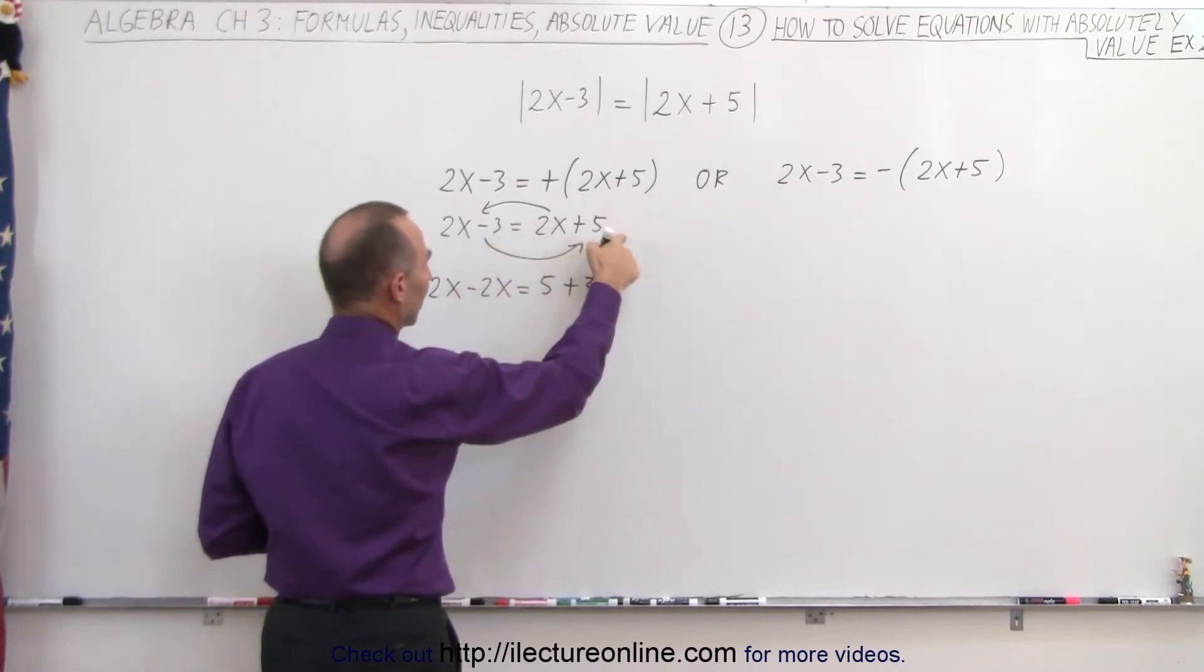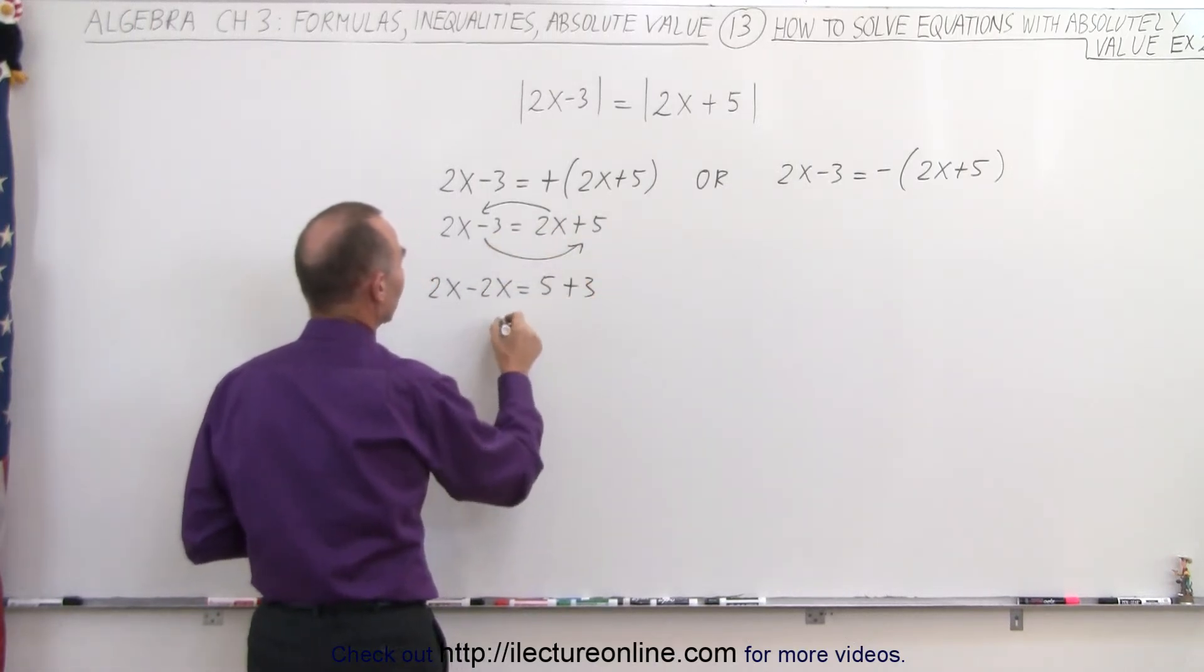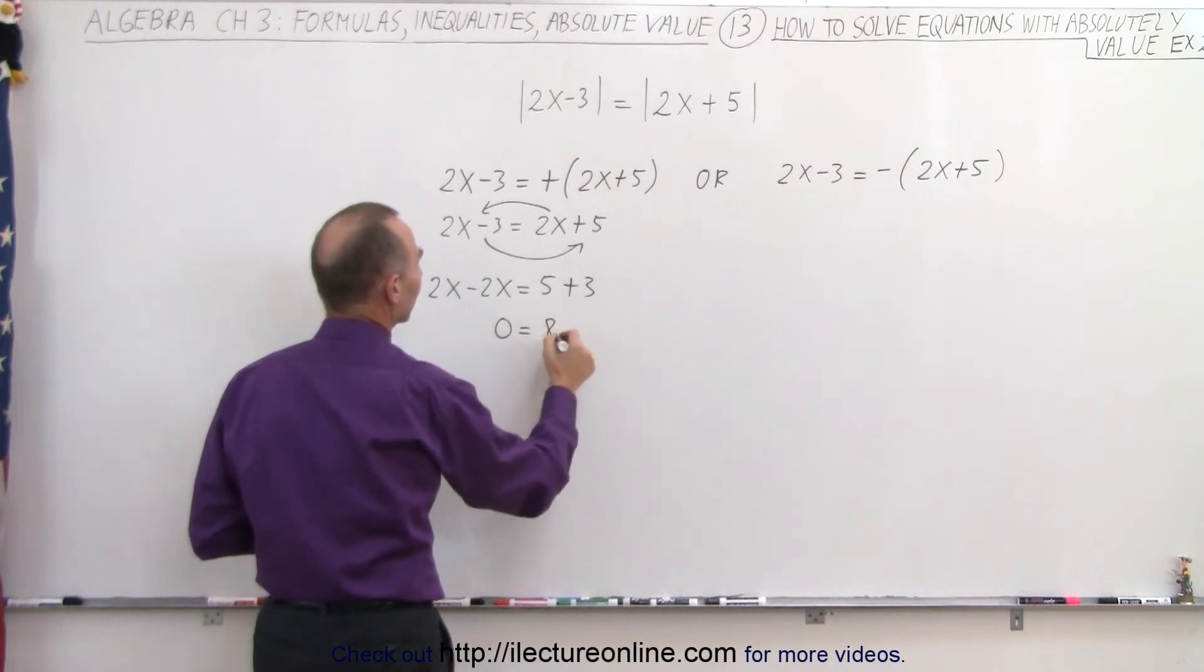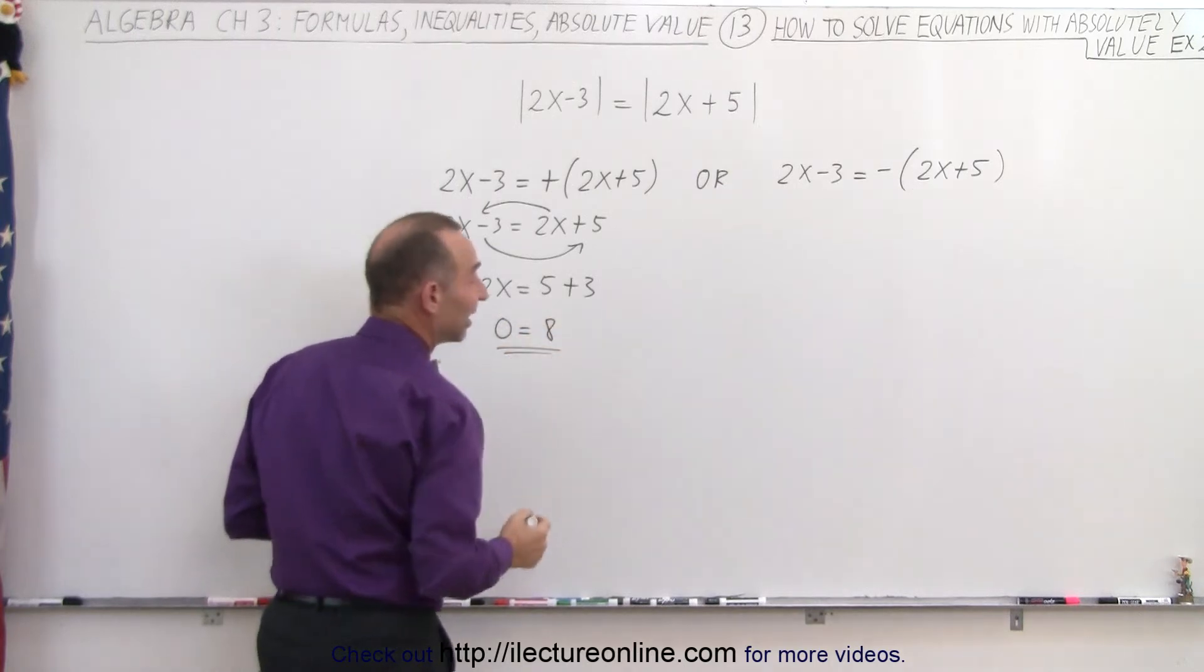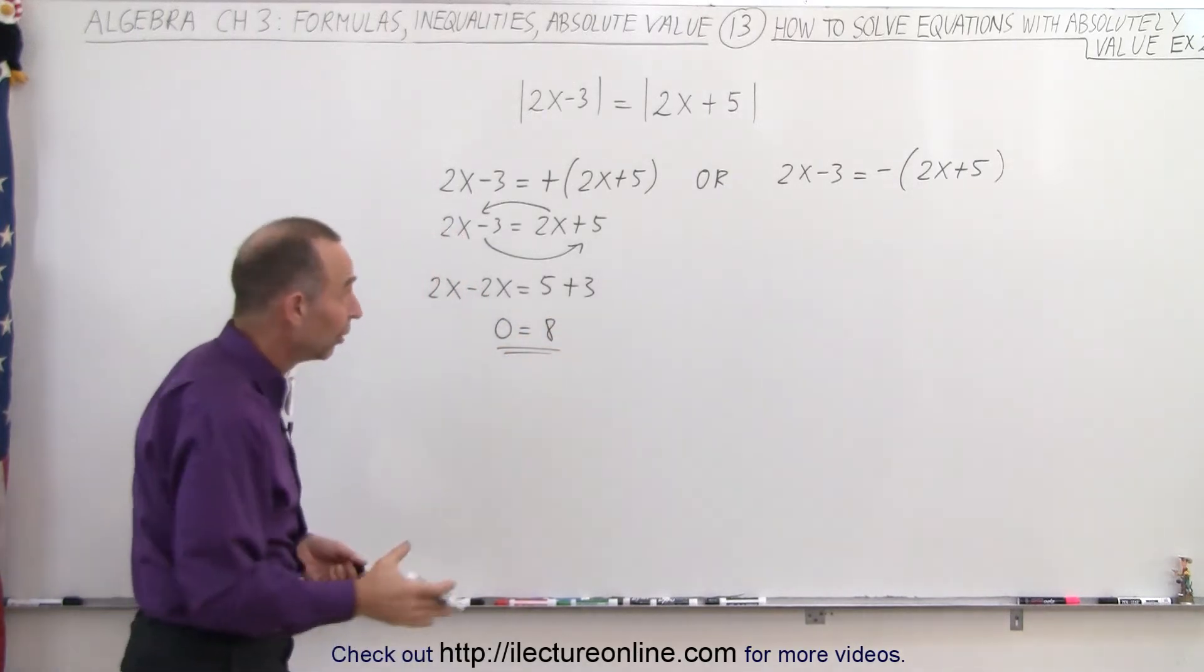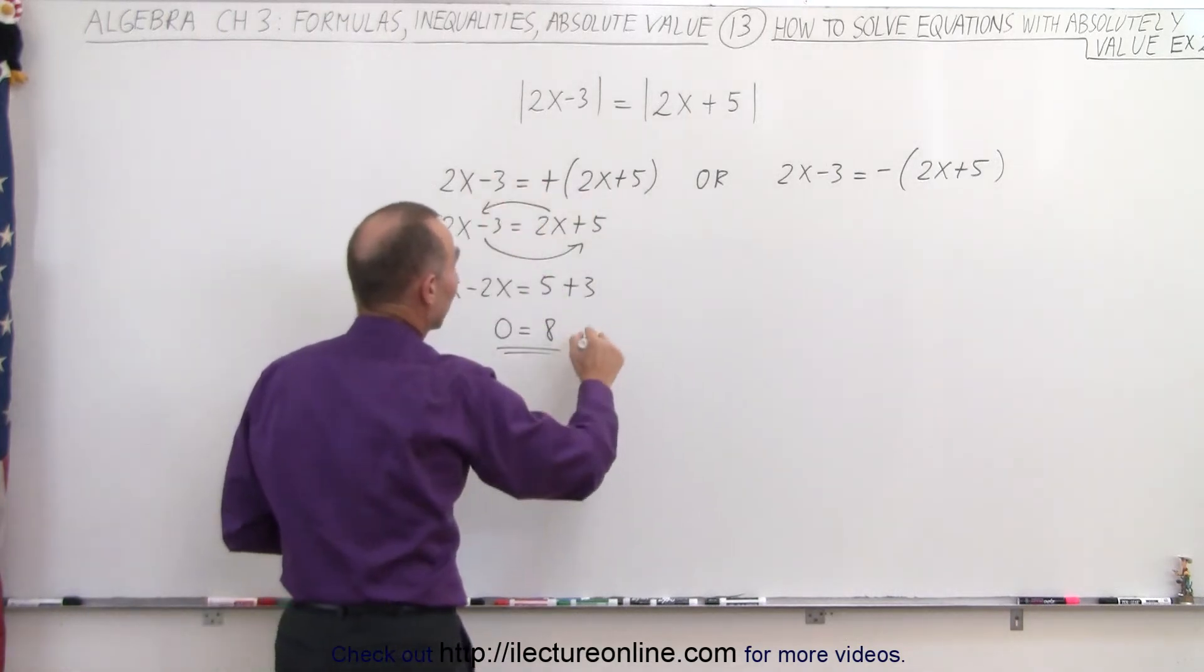because when we move the negative 3 to the other side, it becomes a positive 3. And we get 0 equals 8. Of course, we can see that is not possible, so this does not offer a solution.